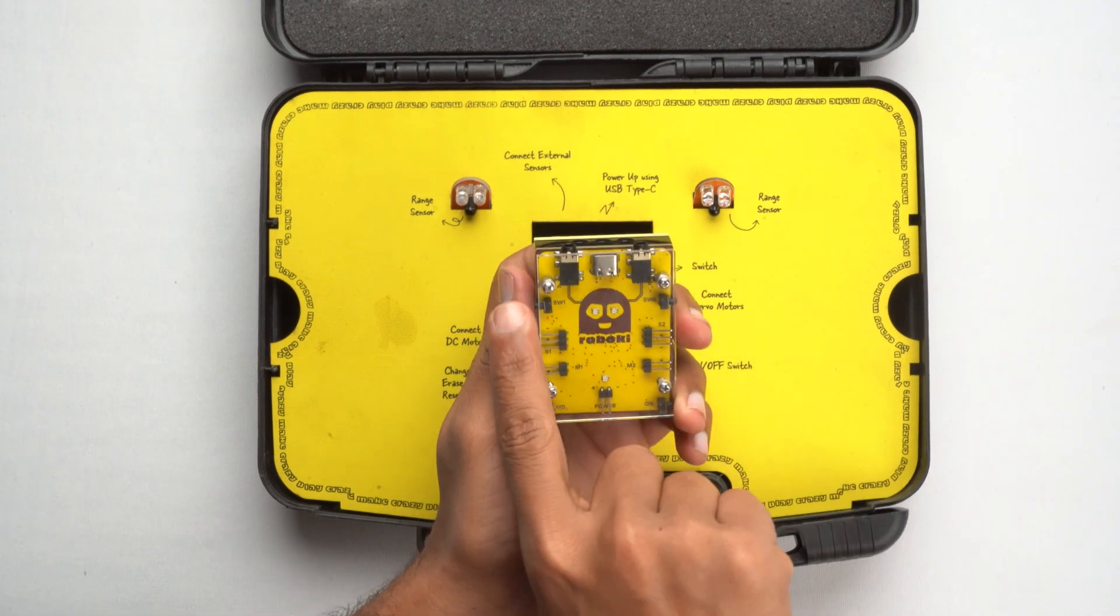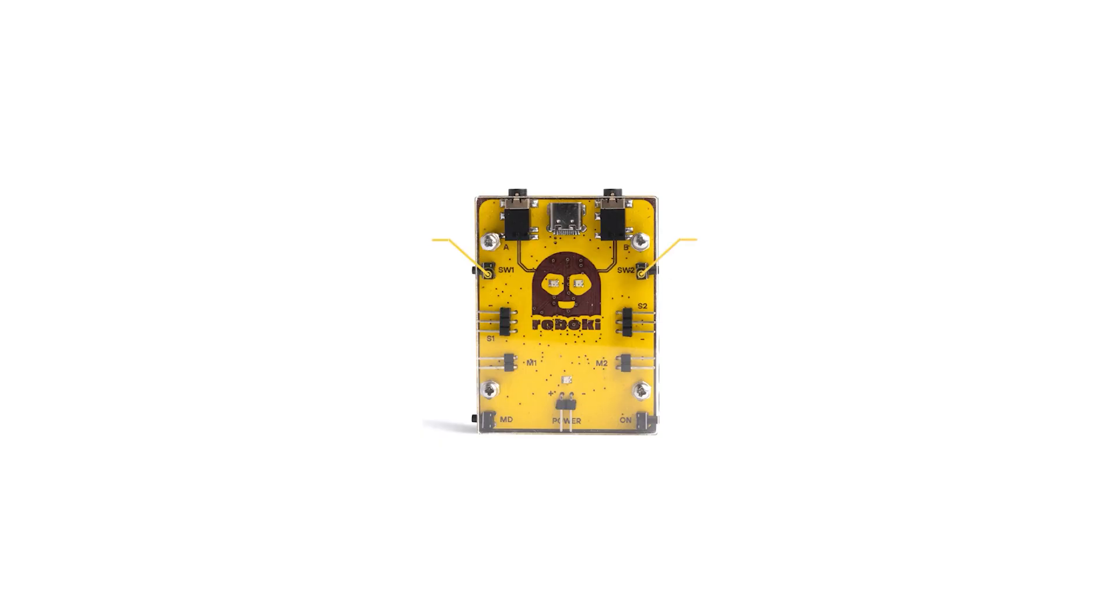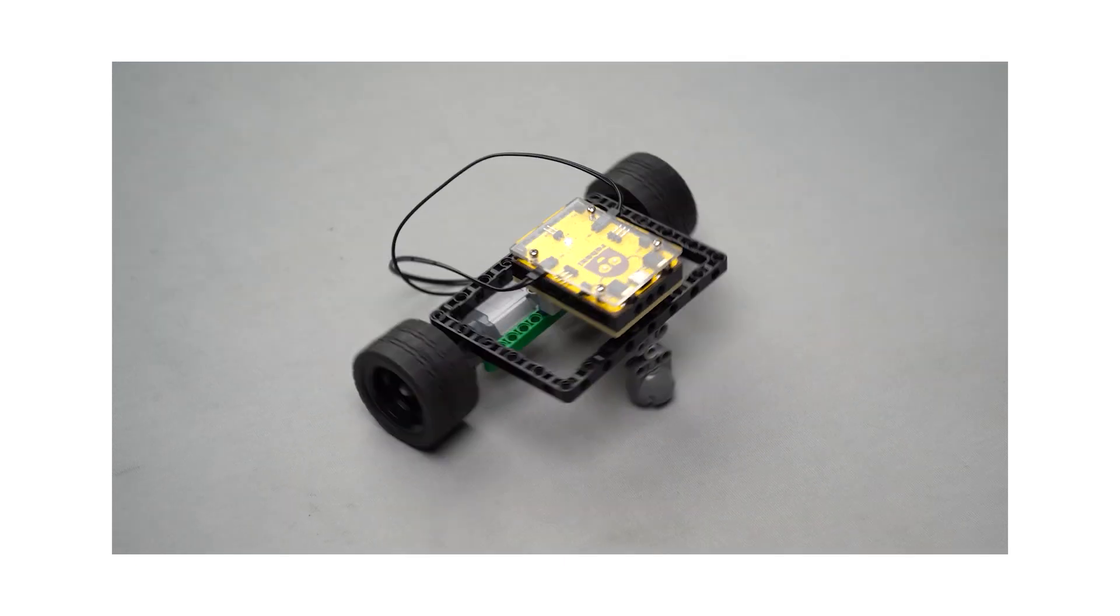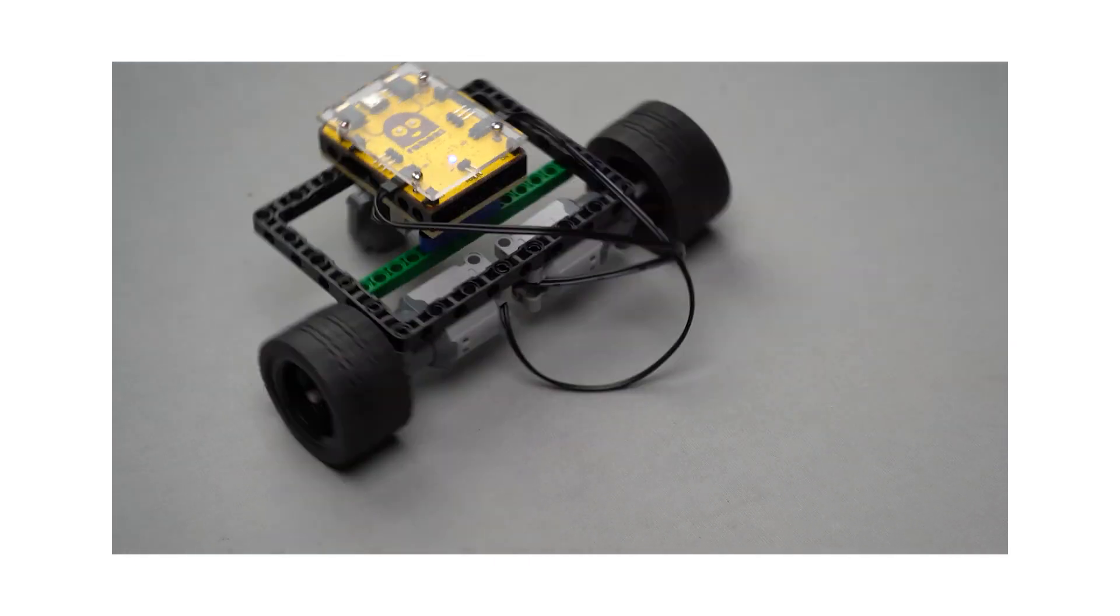Next we have two switches on both sides of the room, switch one and switch two. These switches can be programmed to control various functions in your projects. Imagine turning lights on and off or activating a motor with just a flip of a switch.